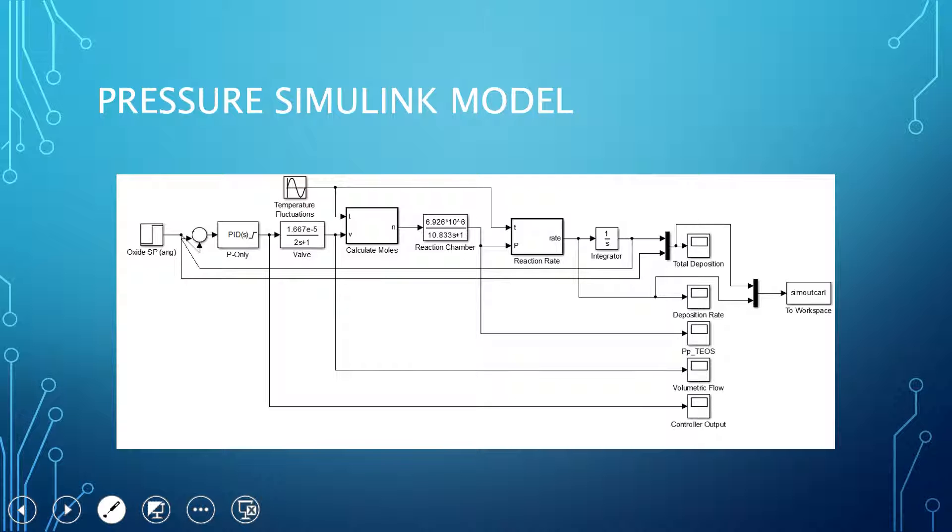So this has a similar function. We have our setpoint of 100 angstroms, and our P-only controller controls a valve, which manipulates the volumetric flow of the TEOS gas coming in. We're also assuming that there is a constant nitrogen flow coming into the vessel as well. So the valve has some dynamics, the time constant is about two seconds, and we have a gain there as well.